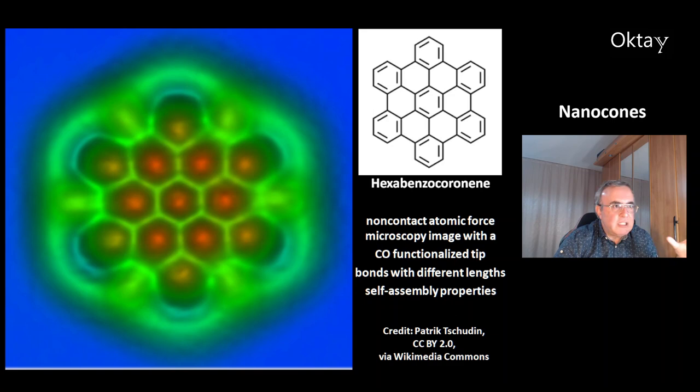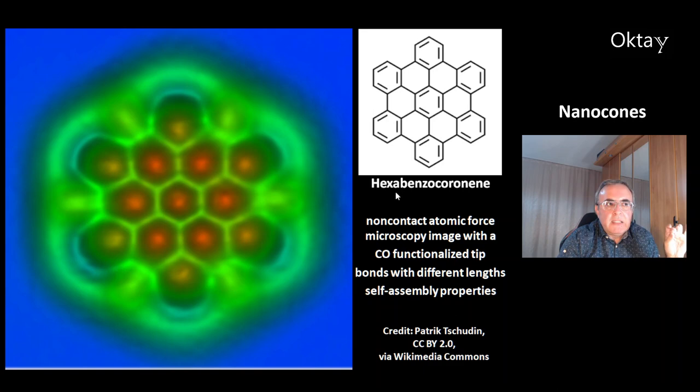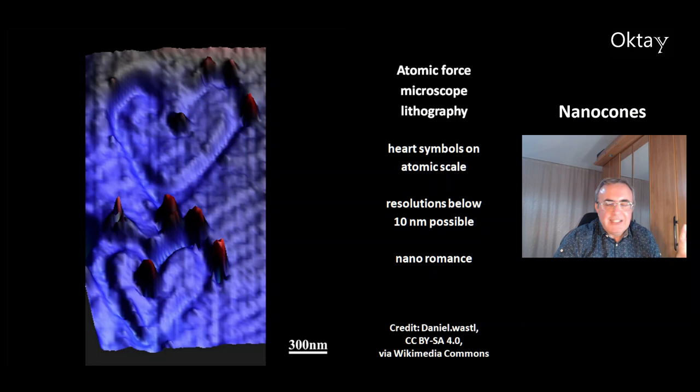This is an interesting molecule: hexabenzocoronene. This is an image from non-contact atomic force microscopy using a functionalized carbon monoxide tip. What's very interesting is that you can see it has different lengths of the carbon-carbon bonds. Hexabenzocoronene and its derivatives are very interesting because of their self-assembly properties.